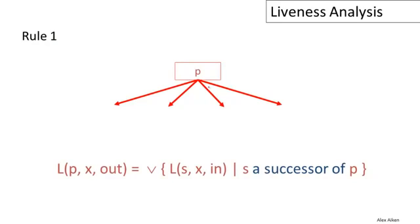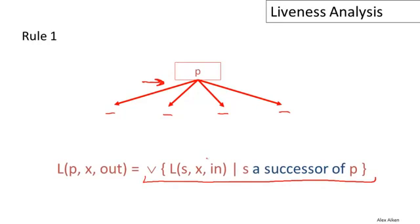Let's look at some of the rules for liveness. We're defining what it means for X to be live immediately after statement P. The intuition is that X is live right after P if the value of X is used on some path beginning at P. To determine this, we take the liveness information at each of the successor statements after P and ask: is X live at any of those points? It's just a big OR over the liveness of X at all successors of P, and that gives us the liveness of X at the output of P.